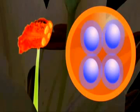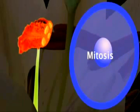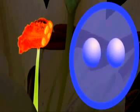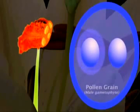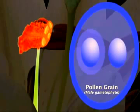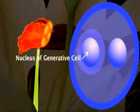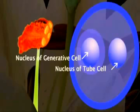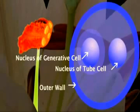After the microspores undergo mitosis, they form pollen grains, which are the two-celled male gametophytes. Each pollen grain consists of one generative cell and one tube cell, surrounded by a tough outer wall.